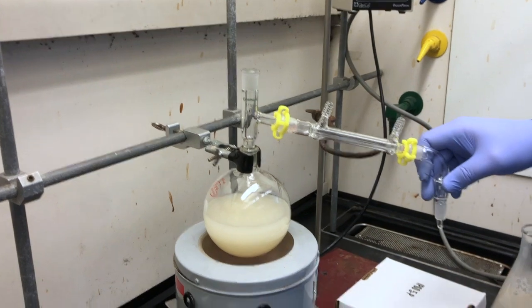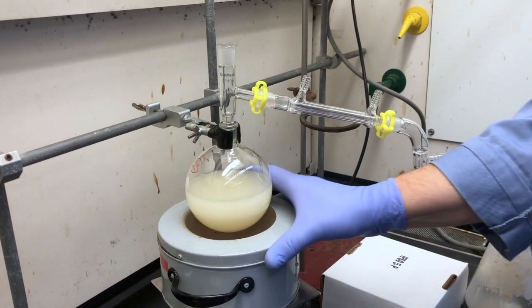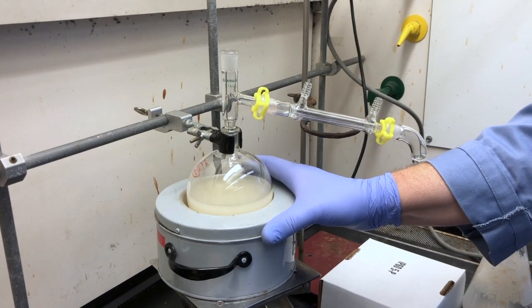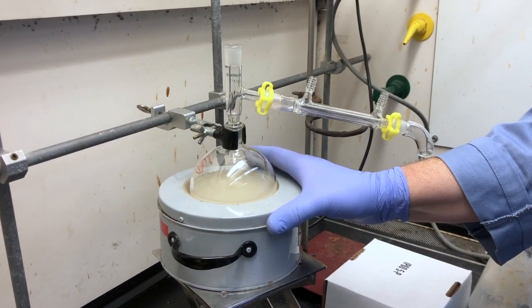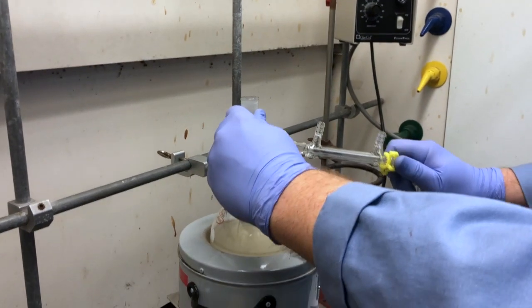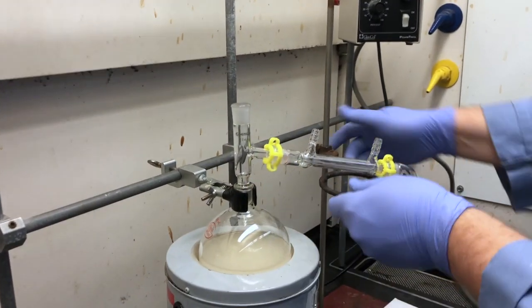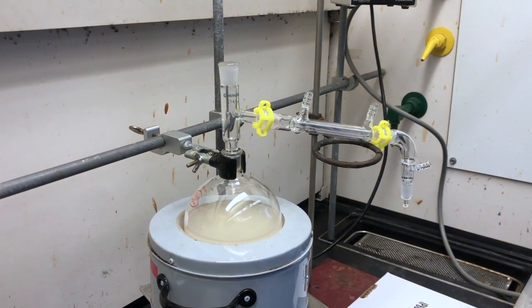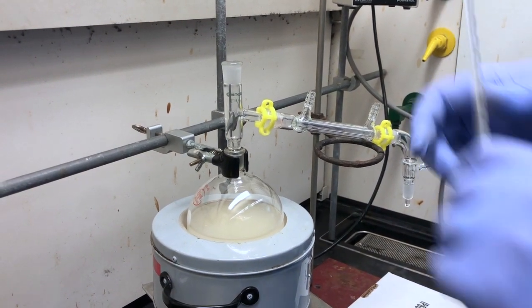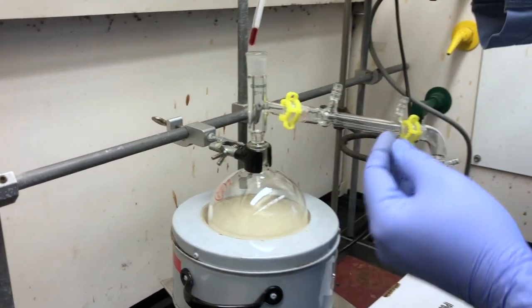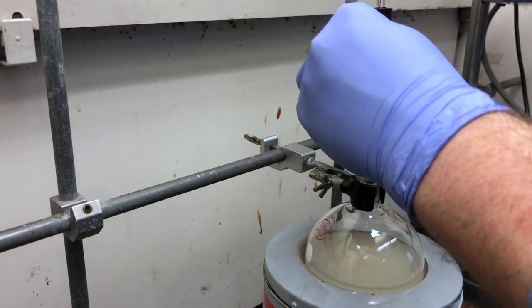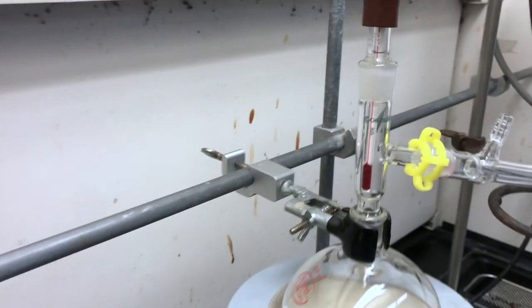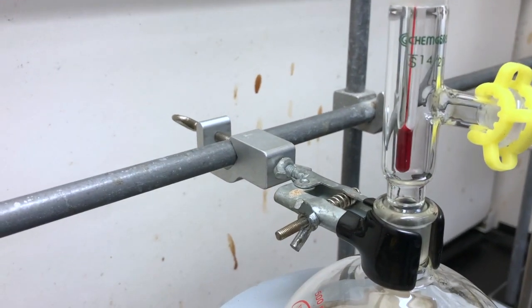We've added some boiling stones to the flask. We can attach the rest of the apparatus and then raise the heater up to the 500 milliliter round bottom flask. We want to make sure that the flask is pointing straight up. The distillation head is perfectly vertical so that the condensation will take place in a downward trajectory. The distillation head is designed so that the condenser will attach at an angle slightly downward.